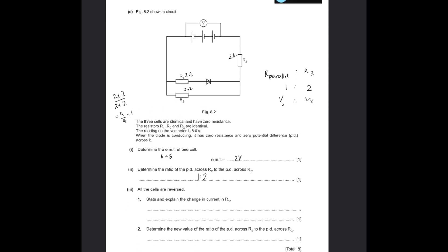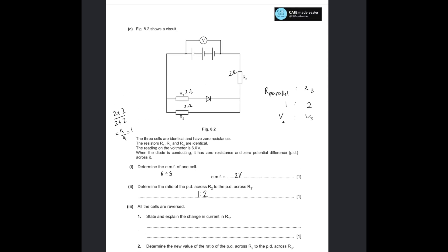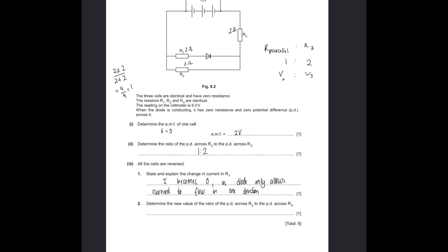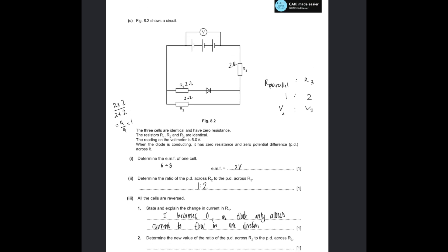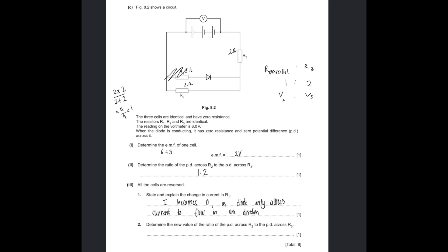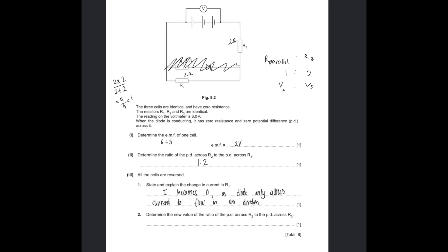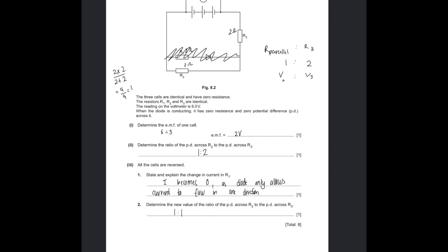The cells are now reversed. State and explain the change of current in R1: the current becomes 0 because of the diode — the diode only allows current to flow in one direction. Determine the new value of the ratio of potential difference across R2 to R3: now the diode branch does not exist, so voltage is equally divided between the two remaining resistors, giving a ratio of 1:1.